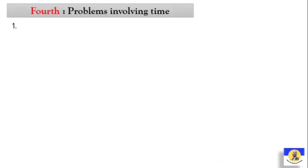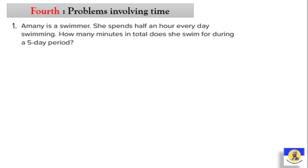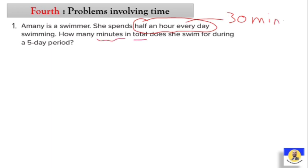Fourth: problems involving time. Question 1: Amani is a swimmer. She spent half an hour every day swimming. Half an hour means 30 minutes. How many minutes in total does she swim during a five-day period? 30 minutes × 5 days = 150 minutes.